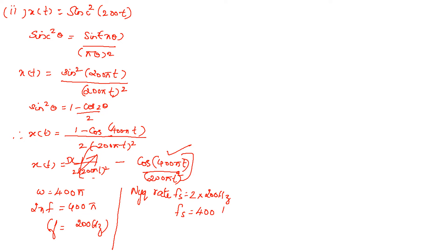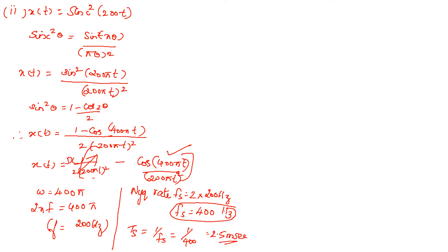We have the Nyquist rate as 400 Hz. The Nyquist interval is Ts = 1/fs = 1/400 Hz = 2.5 milliseconds. That is the answer to the second question.